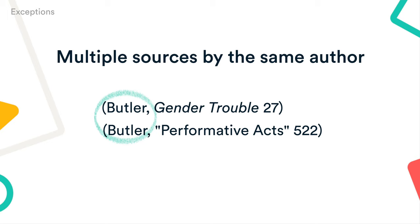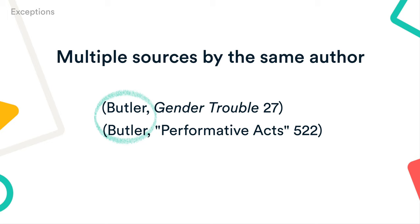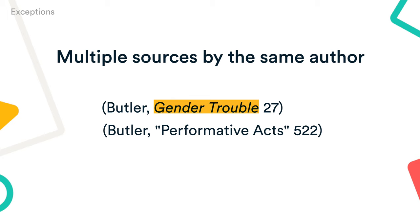Let's take a look at some exceptions. If you cite more than one work by the same author, add a shortened title to signal which source you're referring to. If the first source is a whole book, the title appears in italics. If the second is an article published in a journal, the title appears in quotation marks.